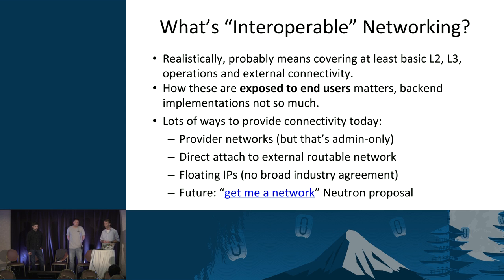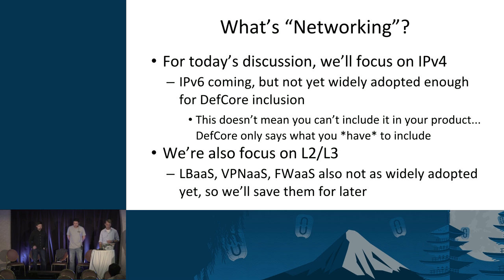Floating IPs are a matter of debate even in the greater industry outside of OpenStack. Amazon has kind of been getting away from that model, and DigitalOcean recently announced they're adopting floating IPs. There's a new API proposal in Neutron that Kyle will talk about in a moment. We're also not including IPv6 in the discussion today because, although it's important, it's just not widely deployed in a lot of OpenStack installations. That doesn't mean clouds can't offer IPv6 — it just means they have to offer IPv4 as well.